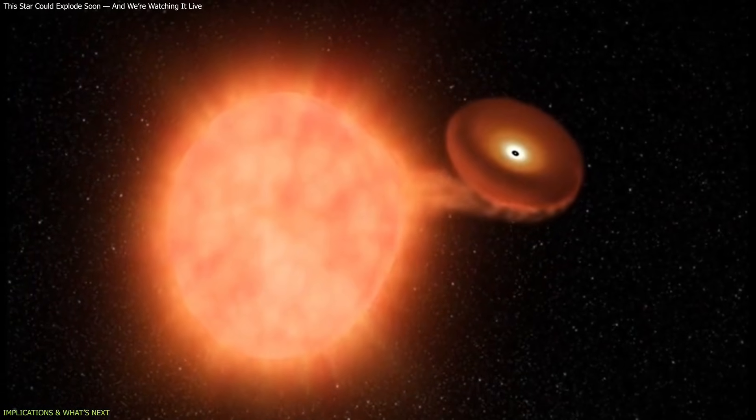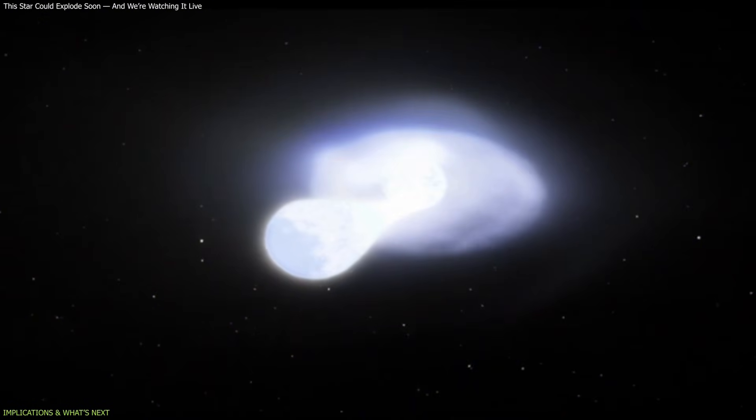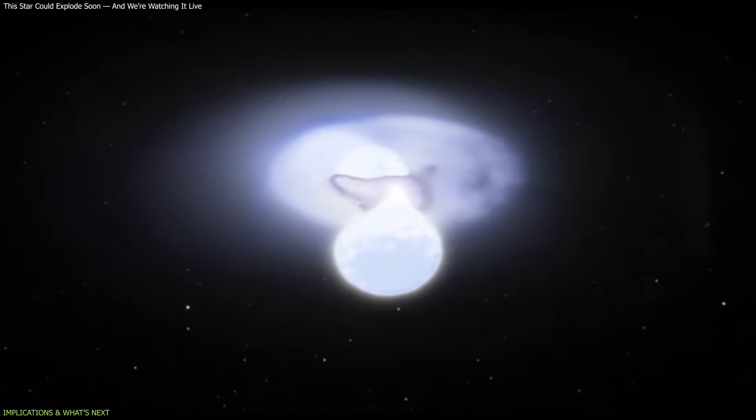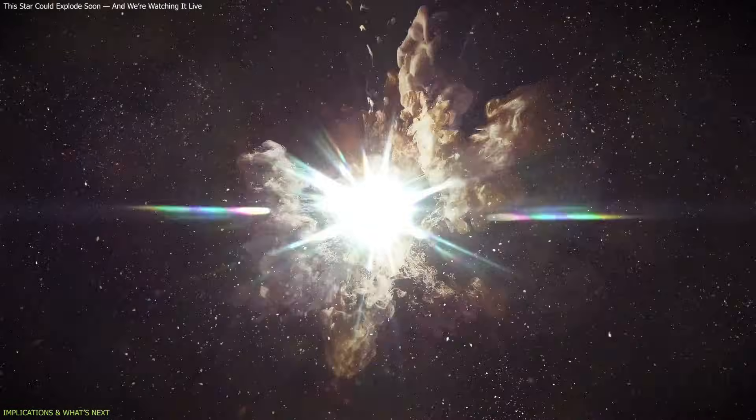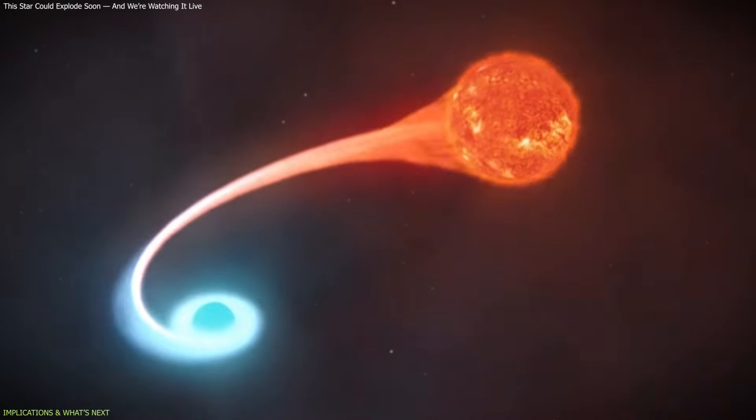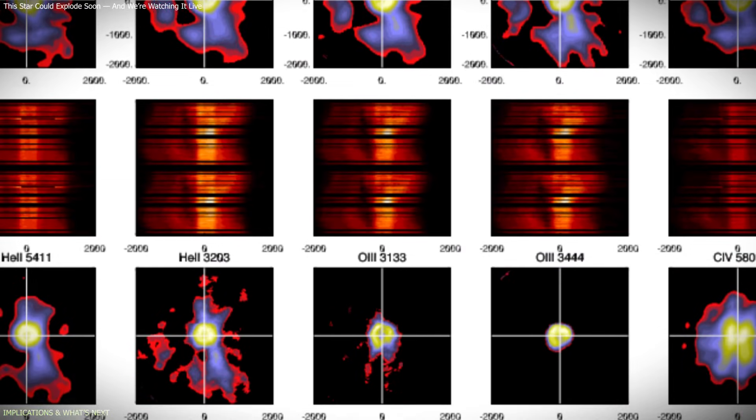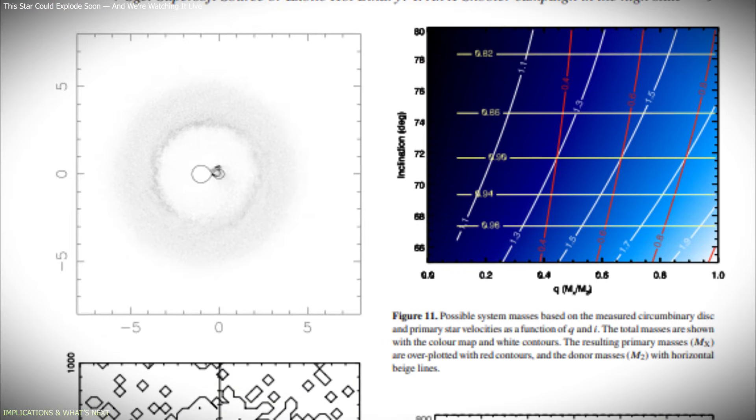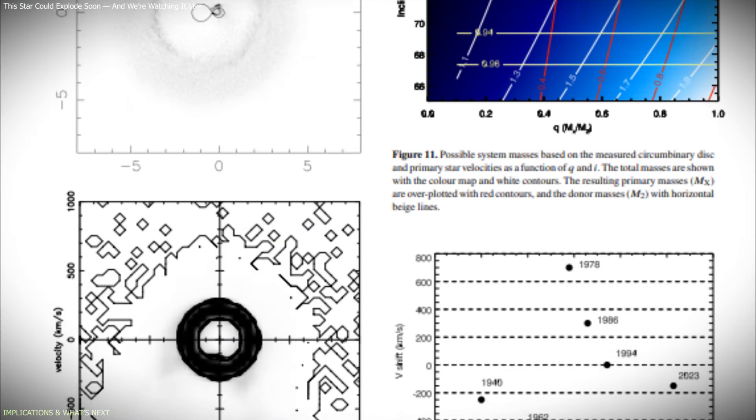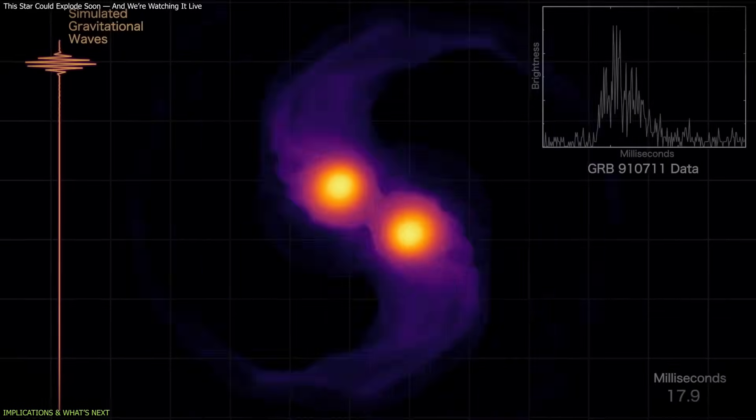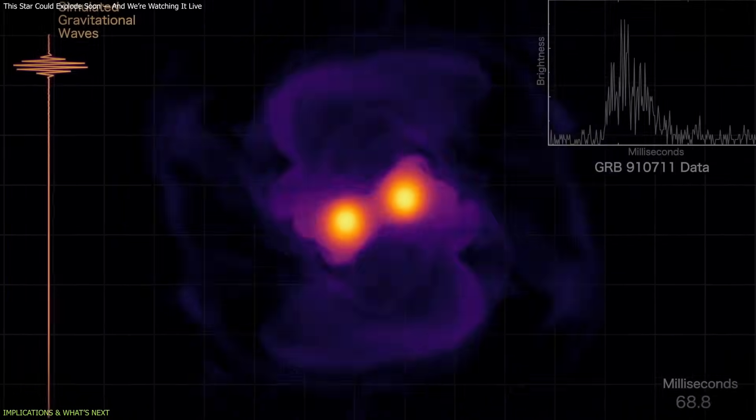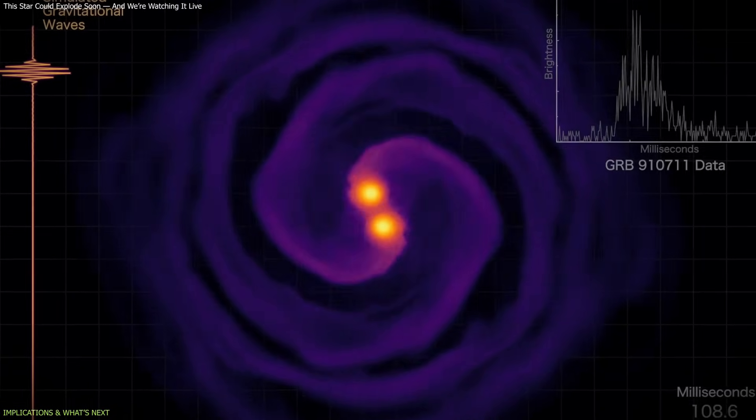One of the most unusual aspects of V Segatai is that astronomers have advance warning that a significant change is likely to occur. Most stellar explosions are detected only after they happen. In this case, researchers are actively monitoring a system that appears to be nearing instability. Observations are continuing across optical, ultraviolet, and X-ray wavelengths. Each provides different insights into temperature, composition, and energy flow. Even subtle changes in brightness or spectral features could signal that the system is approaching an eruptive phase.